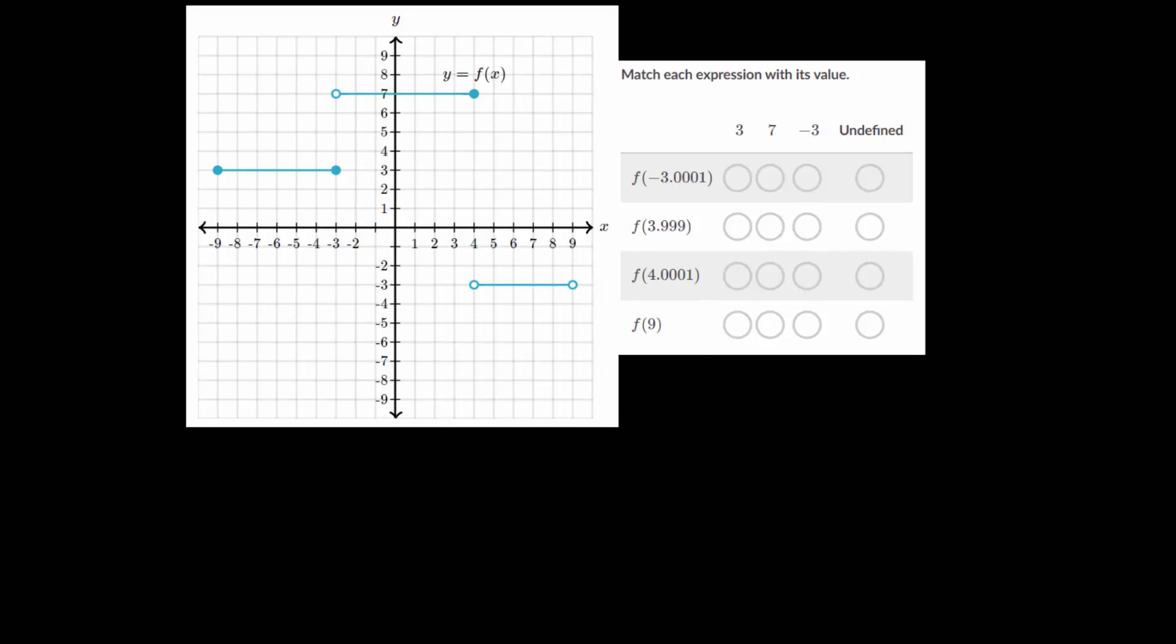We're going to again look at these different intervals and match each expression with its value. Let's start with f of minus 3.0001. So it looks like negative 3 is our border here and we're talking about a point just to the left of that. Points that are just to the left of negative 3 are going to be a part of this step. So that step has a y value of 3.